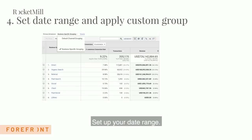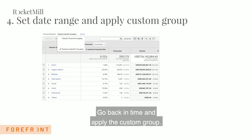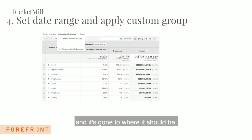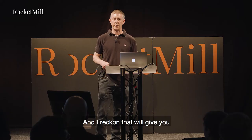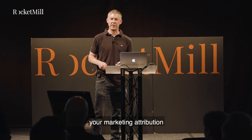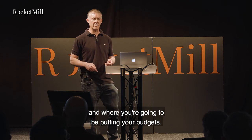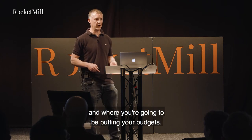Step 4: set up your date range, go back in time, and apply the custom channel group. You can see right at the bottom that all the attribution has been pulled out of 'other' and moved to where it should be. I reckon that will give you a fairly different picture in terms of your marketing attribution and where you're going to put your budgets.